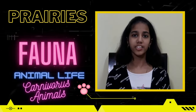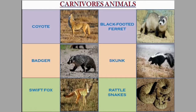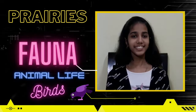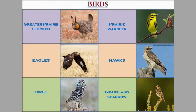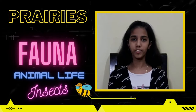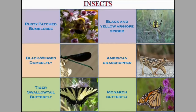Let's see a few carnivore animals found in prairies: coyote, black-footed ferret, badger, skunk, swift fox, rattlesnake, etc. Let's see a few birds found in prairies: greater prairie chicken, prairie warbler, eagles, hawks, owls, grassland sparrow, etc. Let's see a few insects found in prairies: rusty patched bumblebee, black and yellow garden spider, black dance fly, American grasshopper, tiger swallowtail butterfly, monarch butterfly, etc.